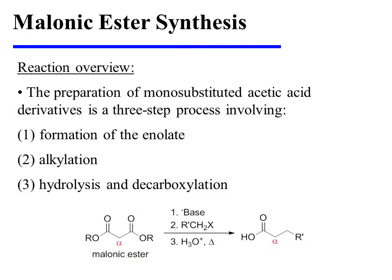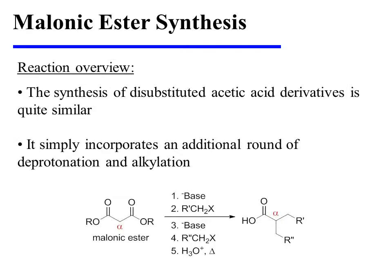The preparation of mono-substituted acetic acid derivatives is a three-step process involving formation of the enolate using base, alkylation, and finally hydrolysis and decarboxylation. The net result is the installation of a substituent at the alpha carbon of acetic acid. The synthesis of disubstituted acetic acid derivatives is quite similar — it simply incorporates an additional round of deprotonation and alkylation, installing two substituents on the alpha carbon.